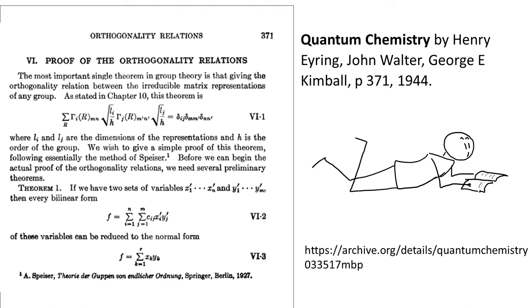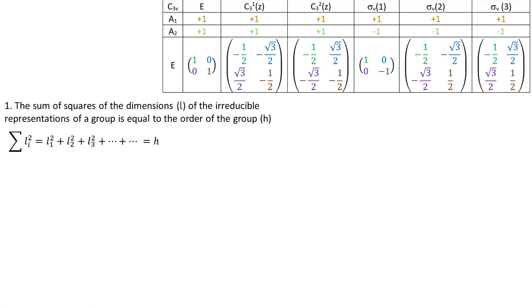Now let's move on to the five rules which are about EREPs and their characteristics. Rule number one. The sum of squares of the dimension of the EREP of a group is equal to the order of the group. Please recall that the symbol of dimension is L. Cotton doesn't give the entire proof but we can show that the sum of squares of dimensions is less or equal to H.